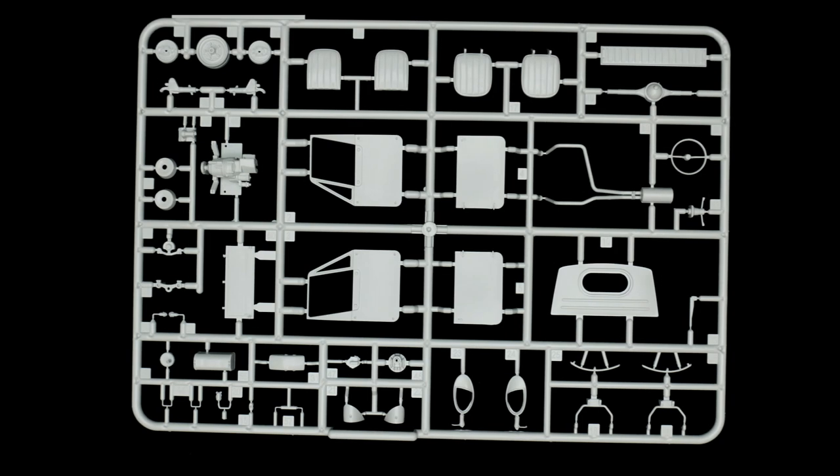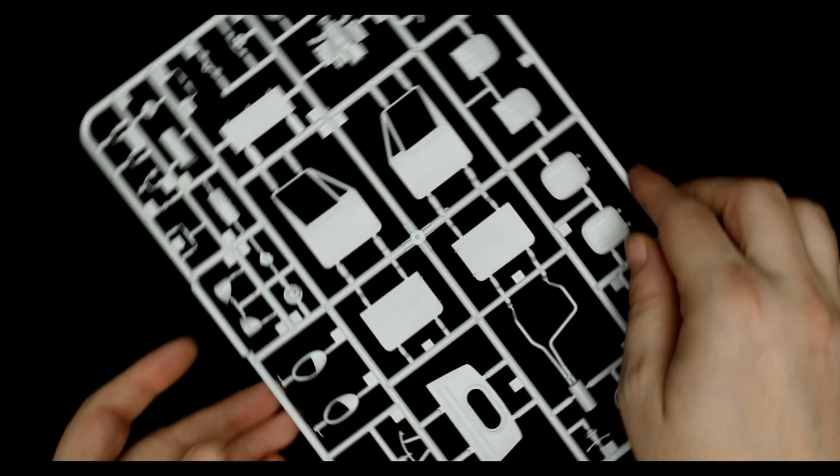Moving on to the first of the many parts trees, this big main parts tree, which has a little bit of everything on it: body pieces, interior pieces, chassis pieces, suspension pieces, whatever pieces, you name it pieces, a little bit of everything.